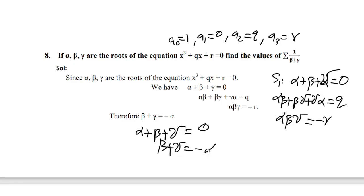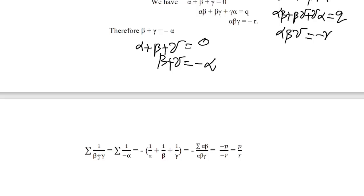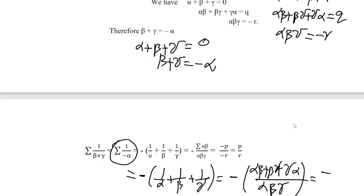Since α + β + γ = 0, we get β + γ = −α. The question asks for Σ 1/(β + γ). Substituting β + γ = −α, the summation becomes Σ 1/(−α) = −Σ(1/α). Now Σ(1/α) = (βγ + γα + αβ)/(αβγ) = S2/S3 = q/(−r). Therefore the answer is −(q/(−r)) = q/r.